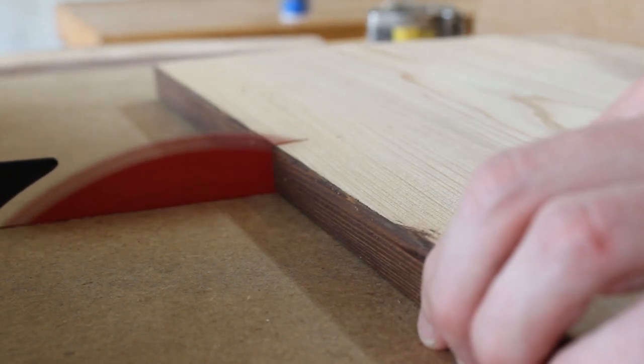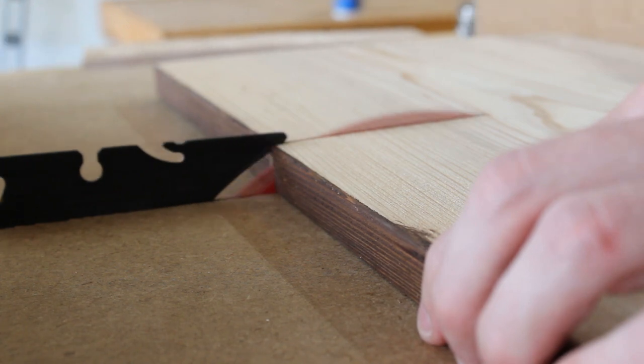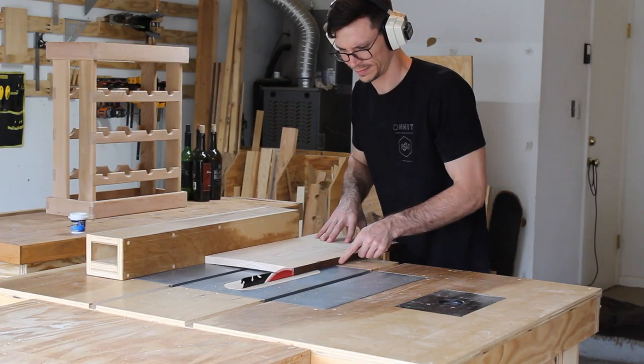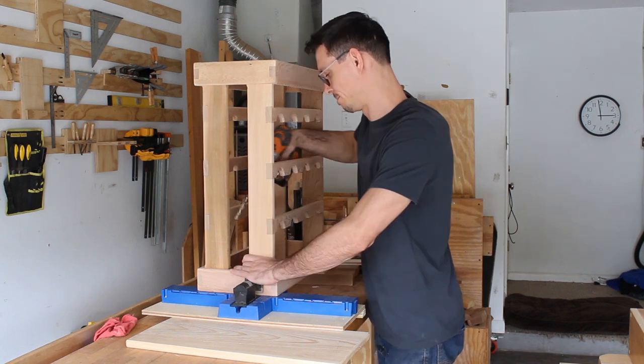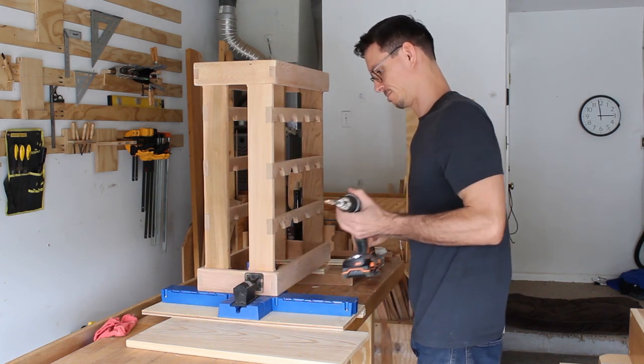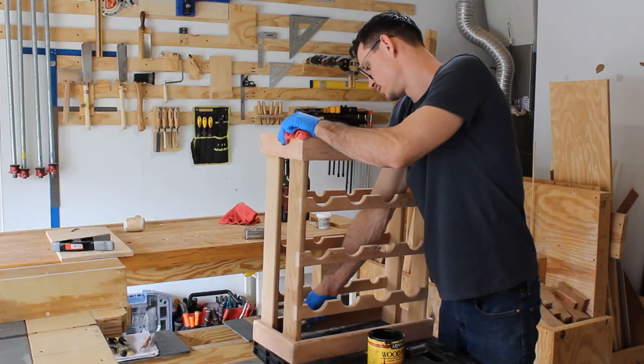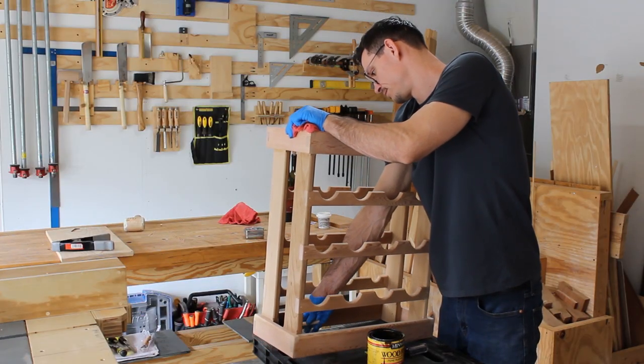With assembly of the frame done, it's time to cut the top to size. I decided to use a Kreg jig to pilot some holes in the top of the legs that would be used to connect the top to the frame, along with the assistance of some glue.